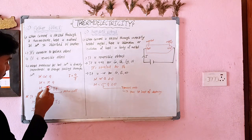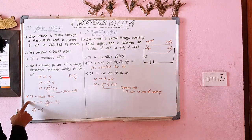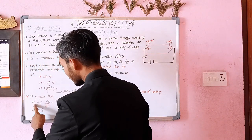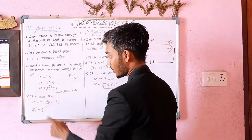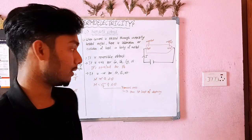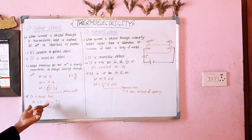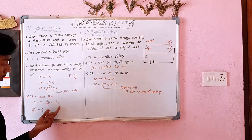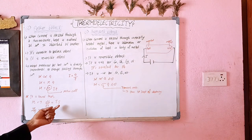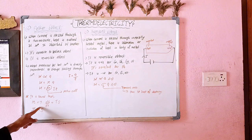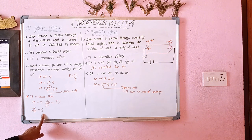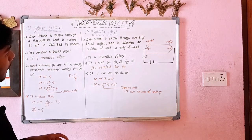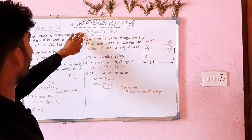It is found that the Peltier coefficient π equals T times dE/dT, where T is temperature in Kelvin and dE/dT is the Seebeck coefficient. So π = T × (Seebeck coefficient). This connects the Peltier coefficient to the Seebeck effect.